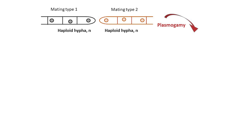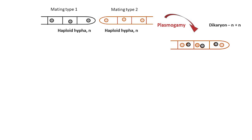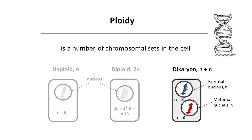The next step is a fusion of the cellular content of two compatible hyphae without nuclear fusion. This step is known as plasmogamy. As a result, two intact nuclei — each nucleus from each parental hypha — are enclosed in the same cell, forming the dikaryon. 'Di' means two and 'karyon' means nucleus. Since the two nuclei are haploid, dikaryotic cells are haploid as well. This state of a cell is indicated as N plus N.